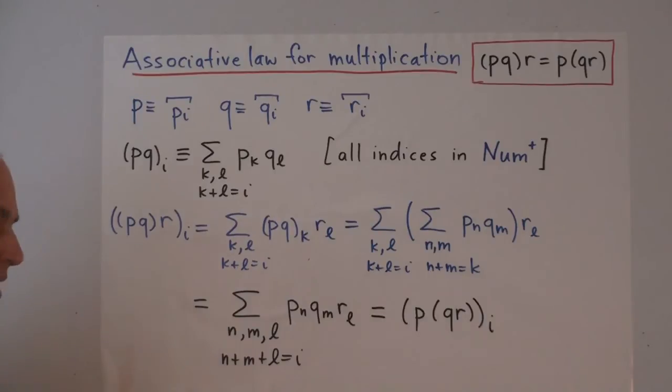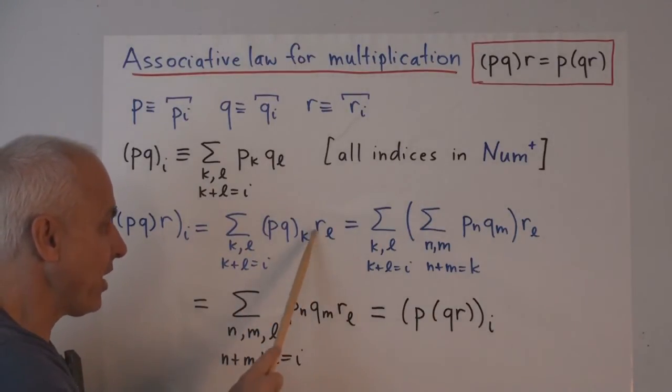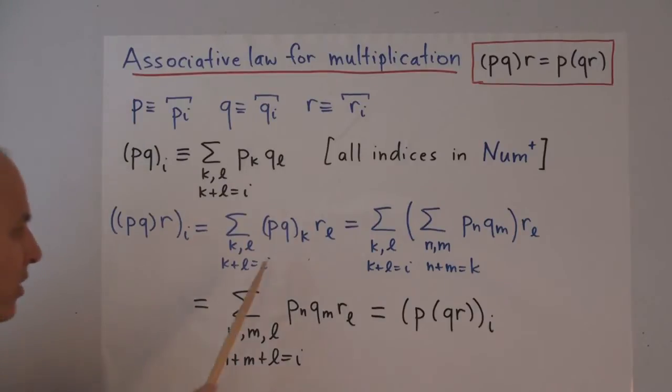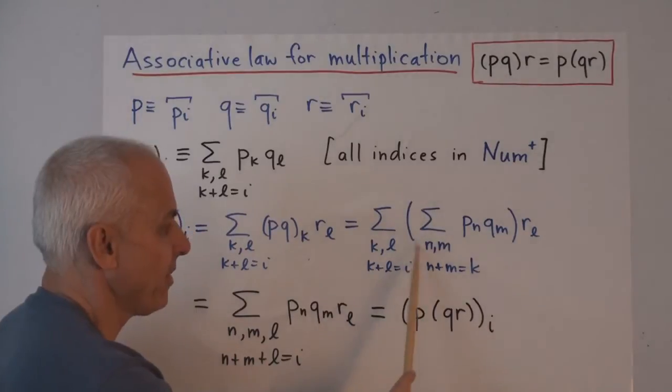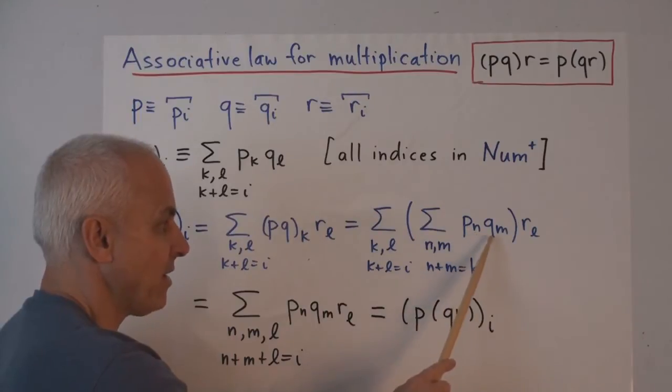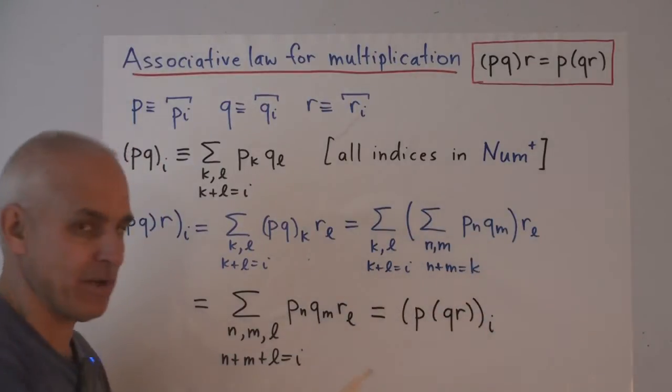Alright, so now suppose we have these three polynumbers, we multiply them all together, in the order P, Q, and then R. Well, the I-th entry of that is, according to this rule, the sum over all K and L, where K plus L equals I, of the K-th entry of P times Q times the L-th entry of R. Okay, now this, what's inside here itself, is going to be replaced by this thing right here. So it's a sum over all, say, N and M, summing to K, of PN times QM. So this is a double summation, a little bit complicated.